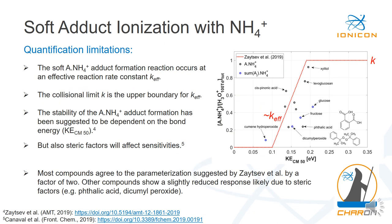Now we know we can measure these oxidized and highly oxidized molecules almost fragmentation-free, but can we also quantify them? The reaction rate is less well-defined than for proton transfer reactions with hydronium ions — the collisional limit is only the upper limit for ionization efficiency, and typically it follows a reduced effective reaction rate constant. Very recently, Zeitseff et al. (2019) introduced a parametrization for this reaction rate constant based on bond energies of the molecule and the ammonium adduct cluster.